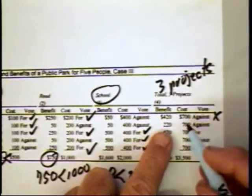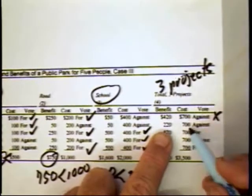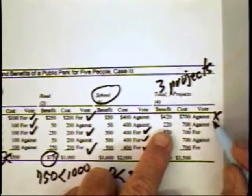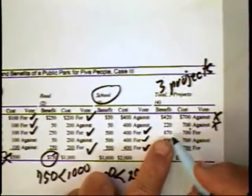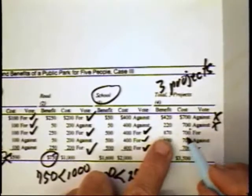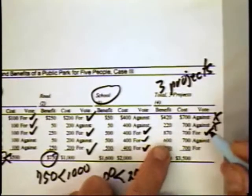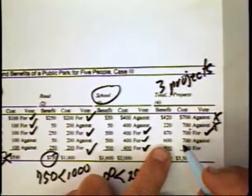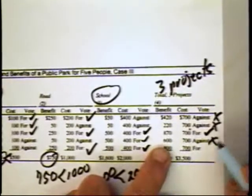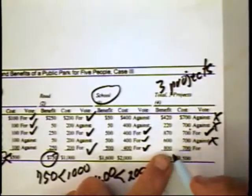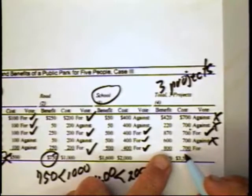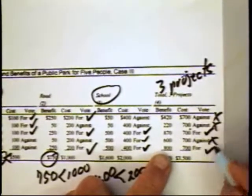B has a total benefit of $220, pays taxes of $700, votes against. C gets $870 in benefits, pays $700 in taxes, votes for. D gets $600 in benefits, $700 in taxes, votes against. And E gets $800 in benefits, $700 in taxes, votes for.